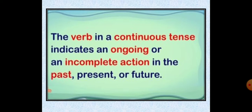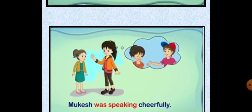Continuous tense mein jo verb hai, woh humein batata hai kai jo bhi action hai woh ongoing hai — past mein, present mein, ya future mein. Past mein ho rahi thi, present mein ho rahi hai, ya future mein ho rahi hogi. So action jab continuous ho, at that time the verb indicates that it's a continuous tense.